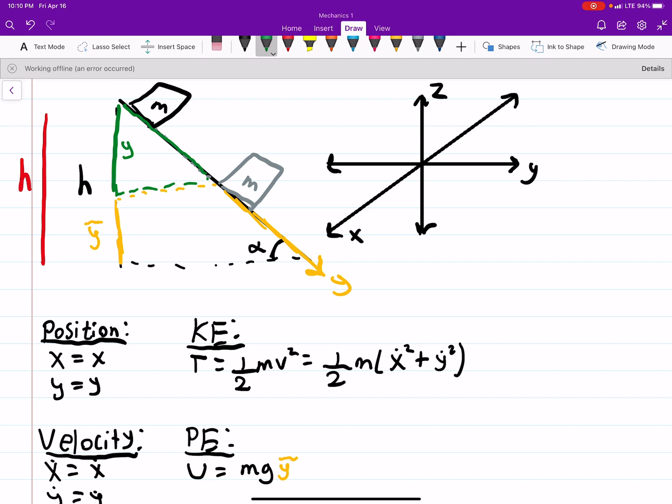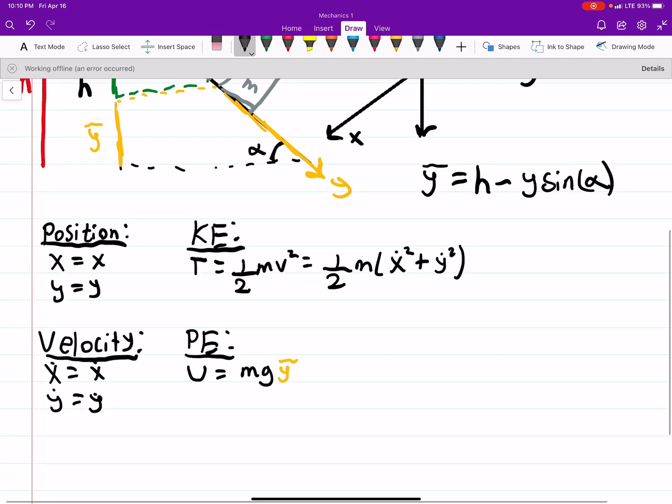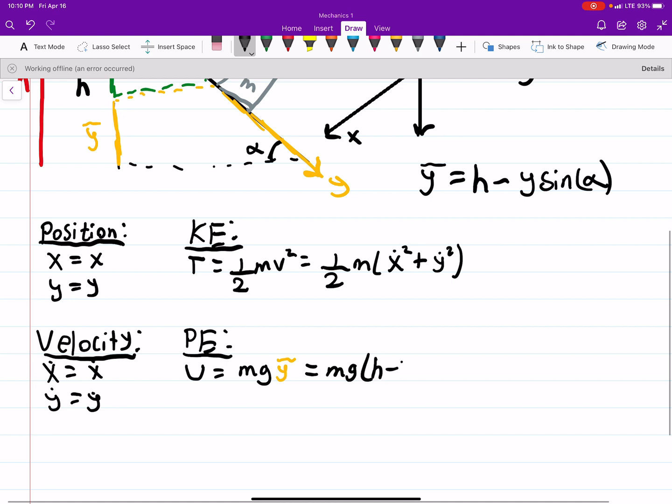So if we do h minus this chunk here, which I think we can see, call this y, then we'll know our y tilde. So essentially what I'm saying is y tilde is equal to our whole thing minus that chunk there. So hopefully that makes sense. So y tilde is just some part. h would be at the very top only. But obviously the potential energy is going to decrease as it slides down. So we need to represent that. Okay? So that is our potential energy, mg h minus y sine alpha.